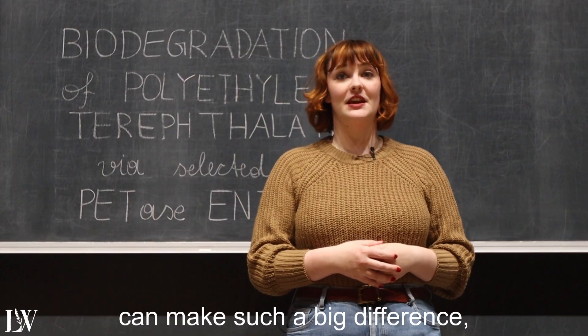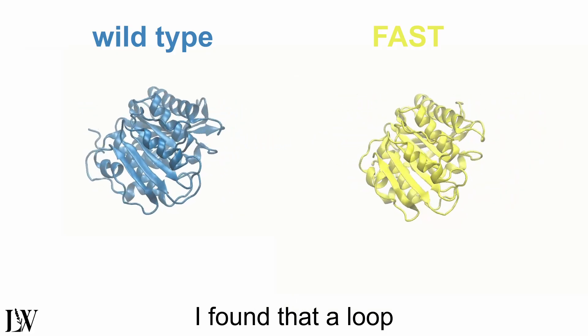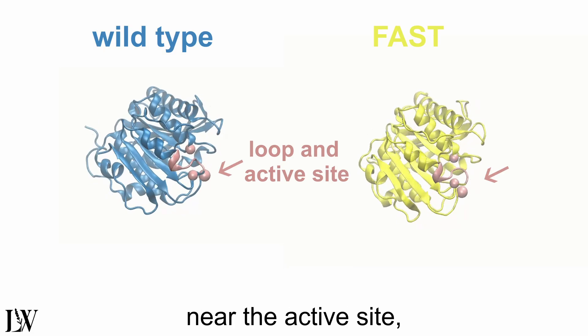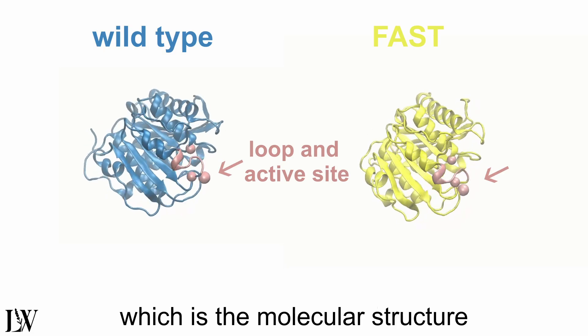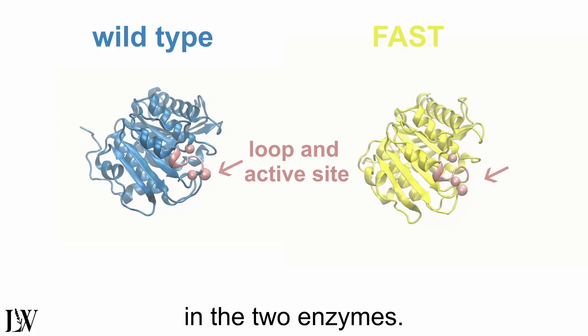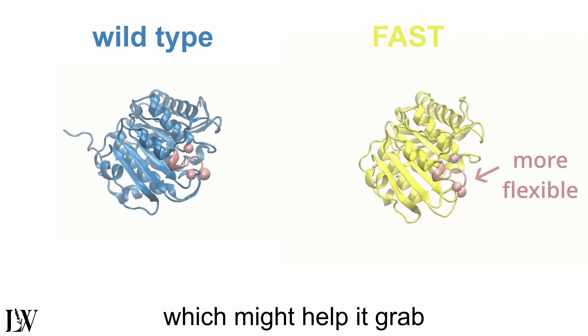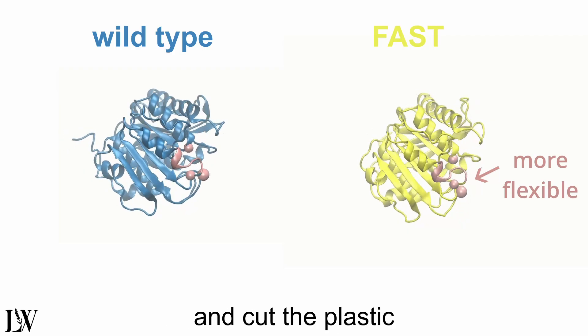To understand how just five small mutations can make such a big difference, I ran molecular dynamic simulations. I found that the loop near the active site, which is the molecular structure used by the enzyme to digest PET, looks very differently in the two enzymes. In fast petase, this loop is more flexible, which might help it grab and cut the plastic more efficiently.